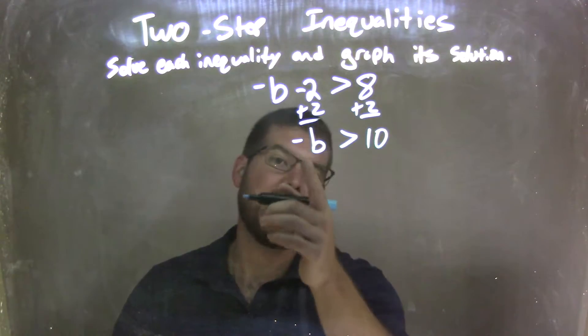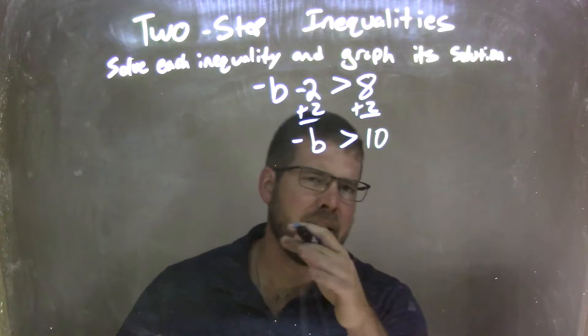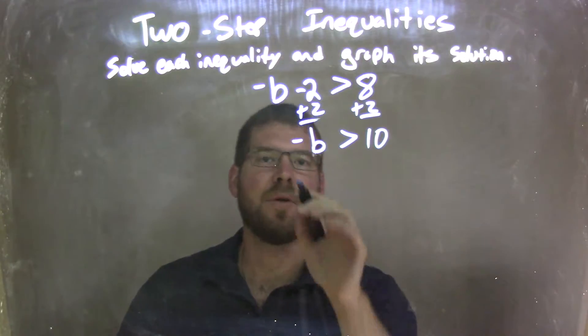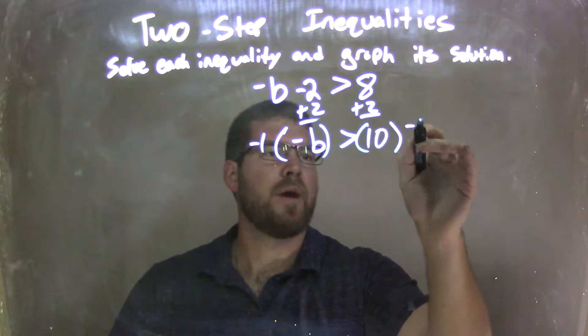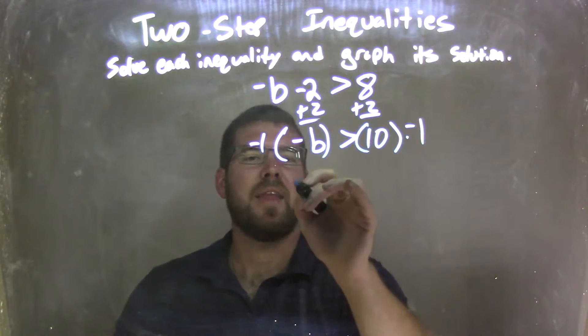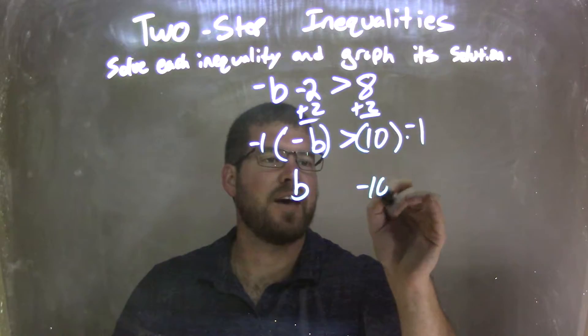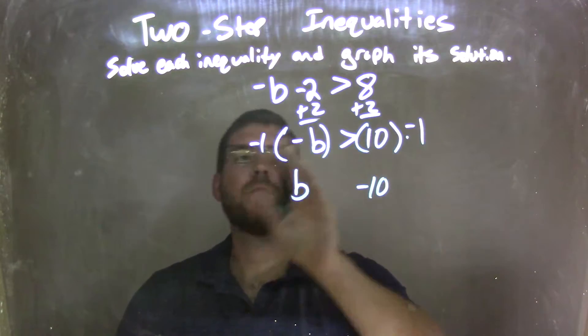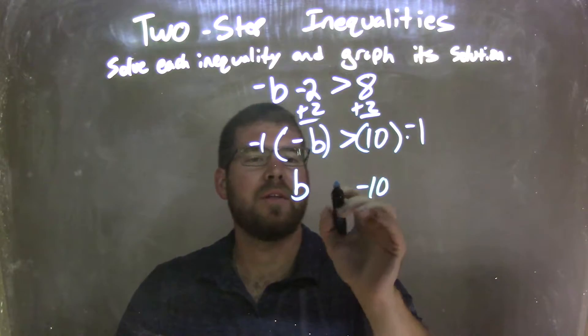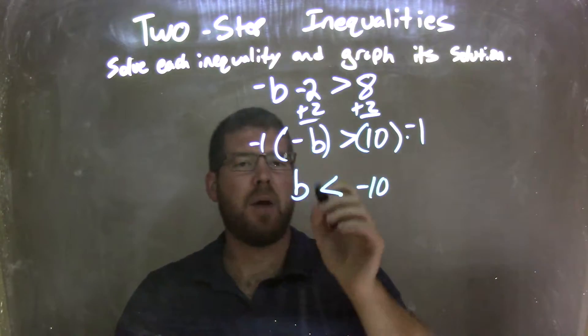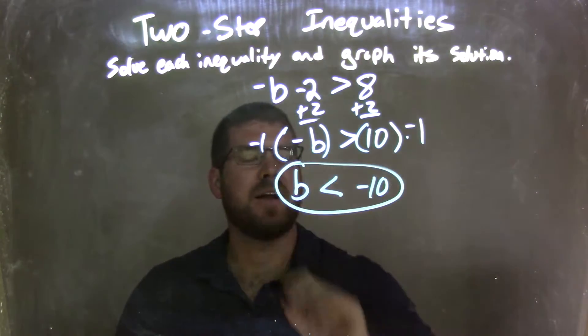But now I need to get rid of that negative. You can either divide by negative 1 on both sides or multiply by negative 1. I'm going to multiply by negative 1 on this one. By multiplying by negative 1 on both sides, that gives me a positive b on the left and a negative 10 on the right. But since we multiplied over an inequality by a negative number, we flip that from a greater than sign to a less than sign. Now we have b is less than negative 10.